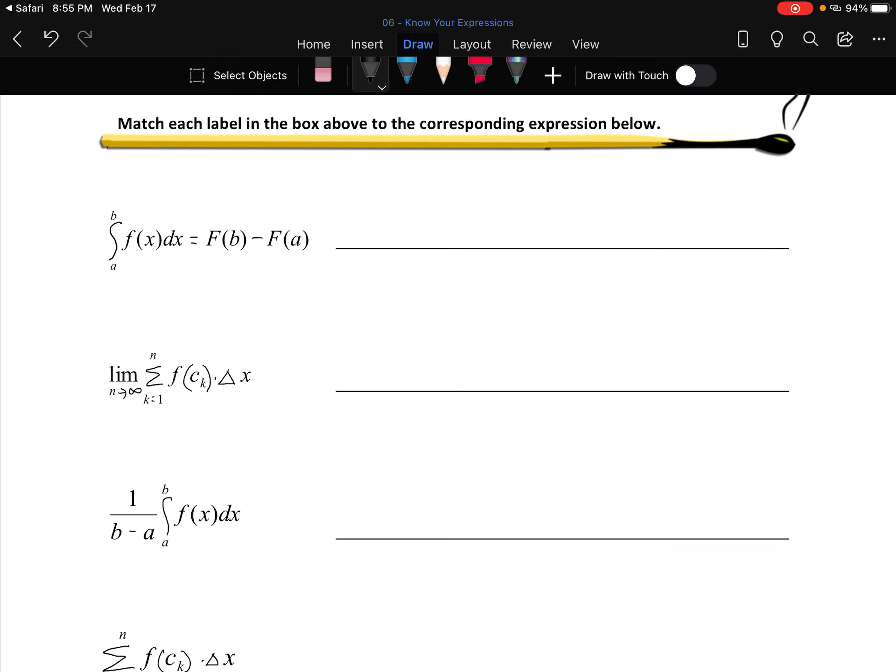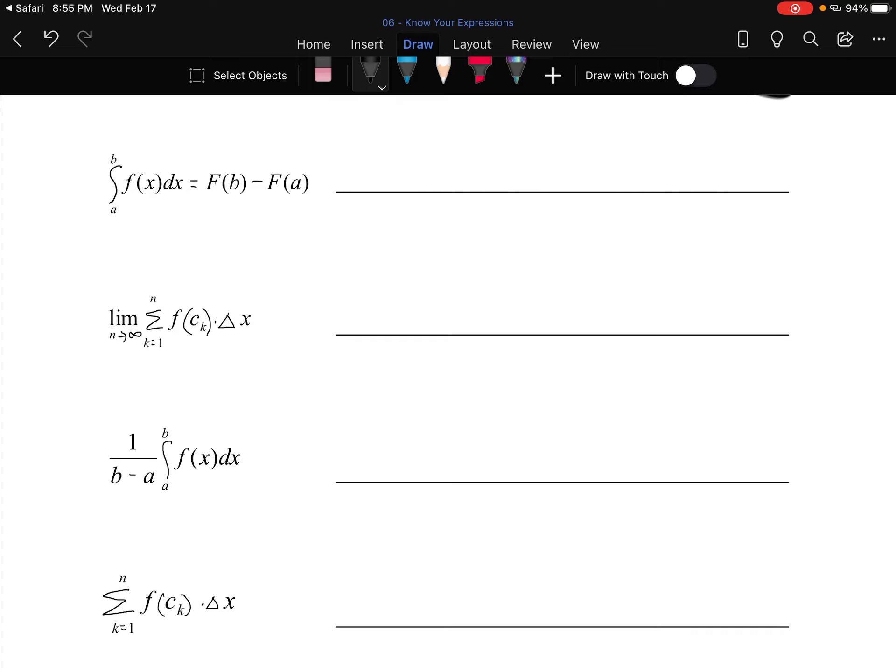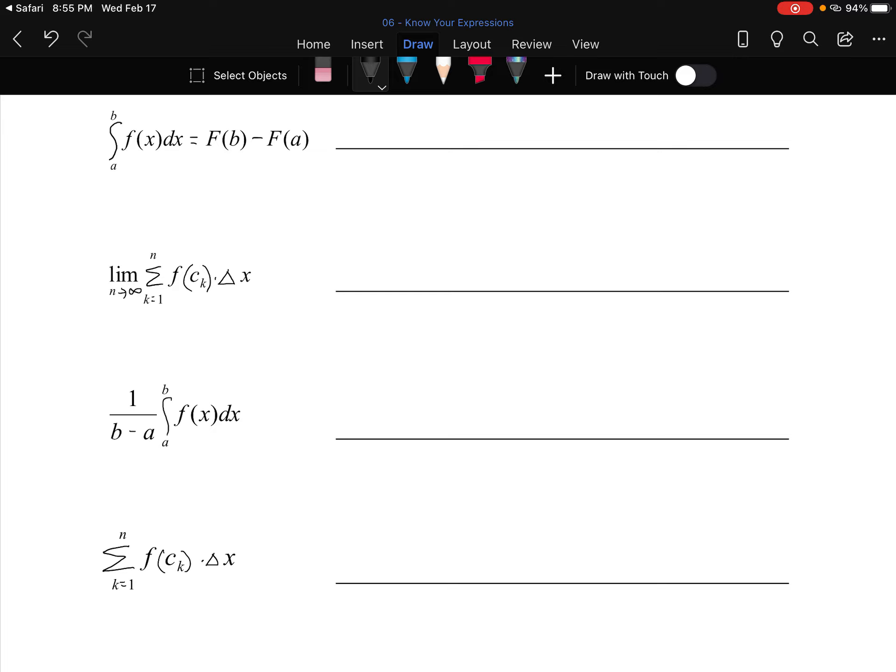Let me just look over these for a second. The first one says integral of f(x)dx from a to b is capital F(b) minus capital F(a). Then we've got the limit as n goes to infinity, summation k equals one to n, f(c_k) dotted with delta x.